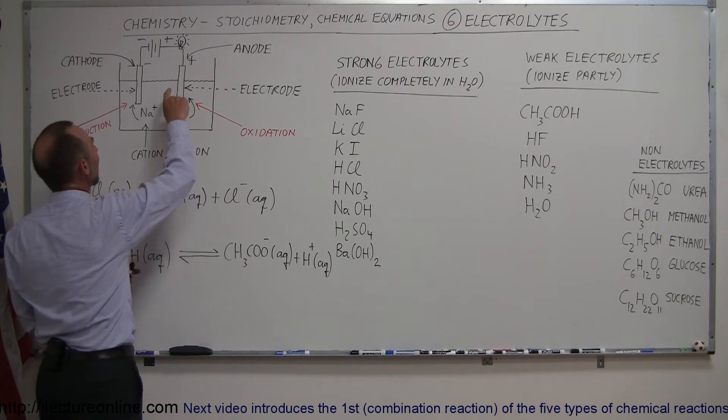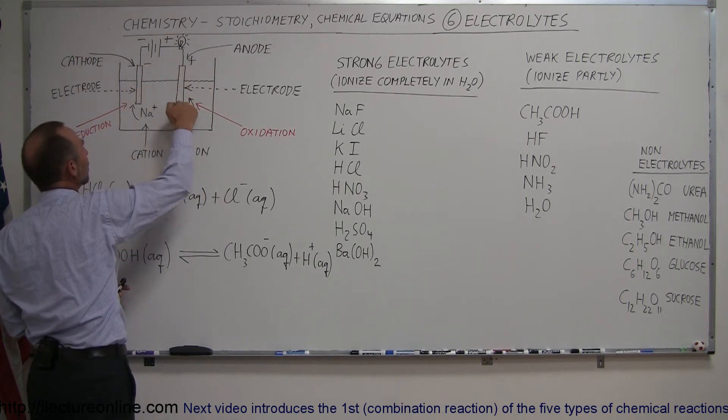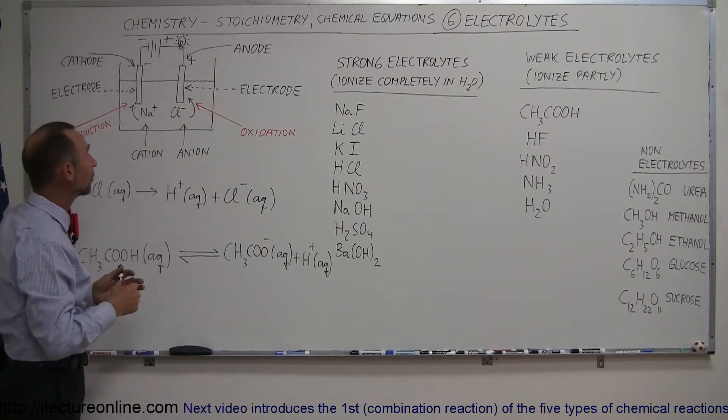In order to have the light bulb go on, we have to have a complete circuit, which means the electrons need to be carried through the fluid. What carries those electrons through the fluid is ions.